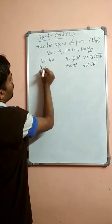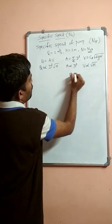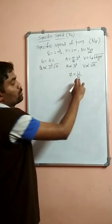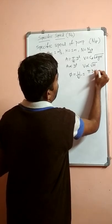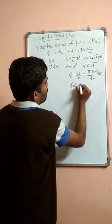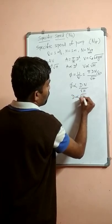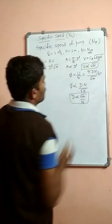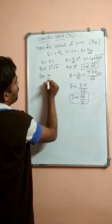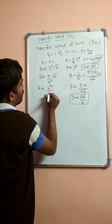Substituting the values in the equation, Q is proportional to D square into square root of H. To get the value of D, we consider the speed ratio expression, which is the ratio of tangential velocity of the wheel to the absolute velocity of water: pi D N upon 60 divided by square root of H. Eliminating constants pi and 60, and further simplifying, we get D is proportional to square root of H by N. Substituting D square as H by N square, combined with square root of H, we get Q proportional to H raised to 3 by 2 divided by N square.